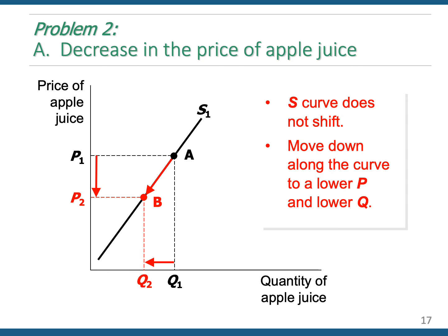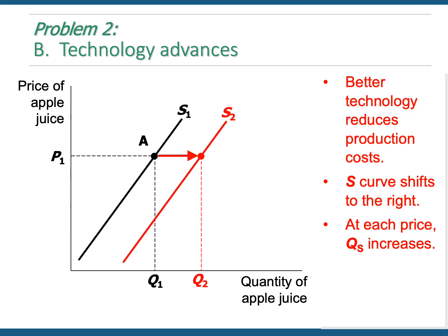Question B asks: what if there's a technological advancement and the technology used to produce apple juice advances, allowing apple juice to be produced at a lower cost? Now that's a supply curve shifter. Technology only shifts the curve in one direction — an increase in overall supply. This could be some sort of automation used to produce apple juice, or maybe a new fertilizer that's super effective in growing apples. The technology used to produce apple juice advances — that's going to be the result.